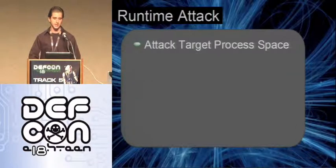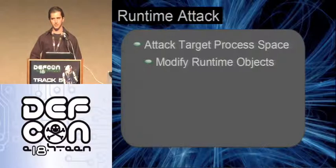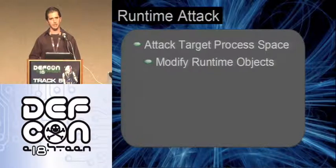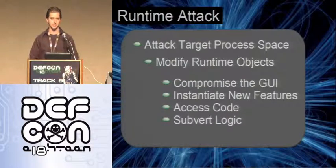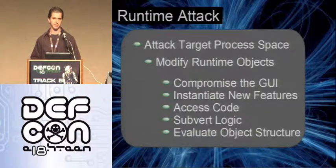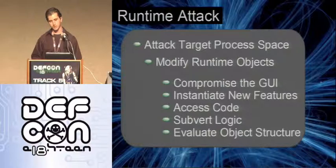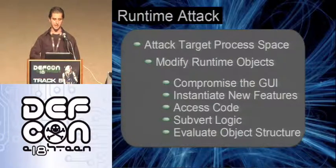The runtime attack goes after the process space itself — your application. You can put more than one application in a process space. We're going to modify the runtime objects of a process, editing the underlying structure of an application — the structure itself, not the code base. This allows us to compromise the GUI, instantiate new features, access the code base, subvert logic, and evaluate the object structure. Evaluating the object structure is more for reconnaissance — figuring out how objects lay in memory and which instance you want to attack. This is also useful when attacking a program live, on the fly.